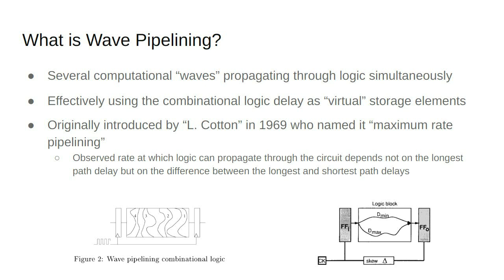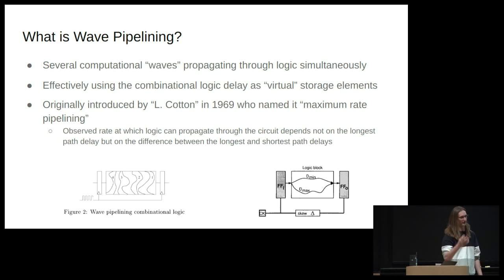So what is a wave pipeline? Essentially it's a block of combinational logic and we're going to input data into it before the previous input has reached the output of the combinational logic block. So we're going to have at least two or multiple waves of computation traveling through our combinational logic. We're essentially using the combinational logic delay as virtual storage elements in place of registers. This was originally published by L. Codden in 1969 who called it maximum rate pipelining. He basically observed that the rate you can put logic through a circuit isn't dependent on the crit path, but the difference between the crit path and the minimum path.